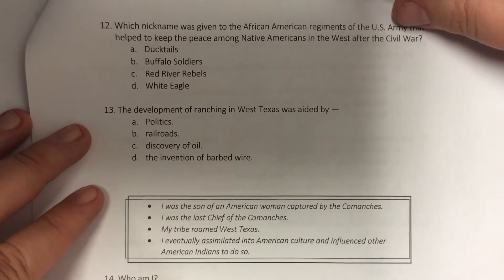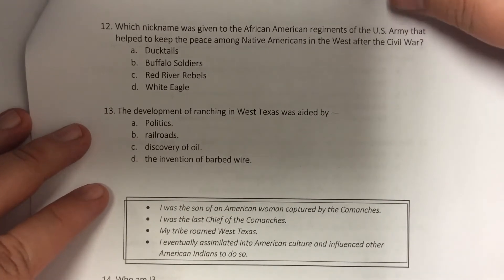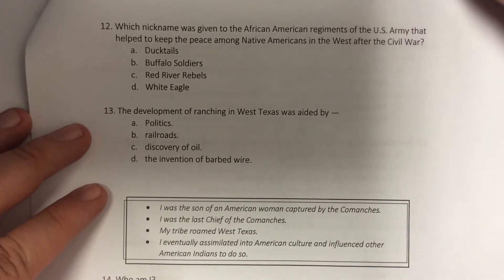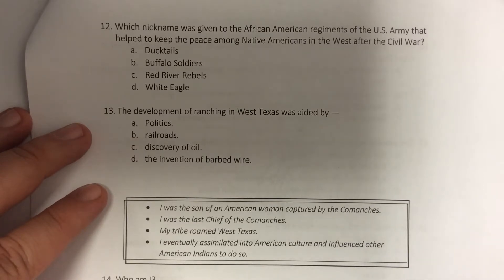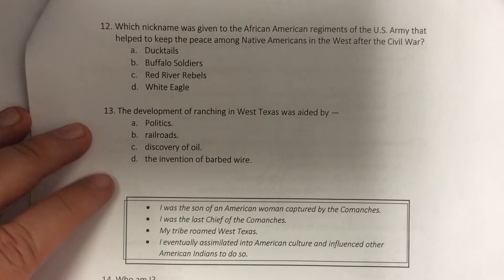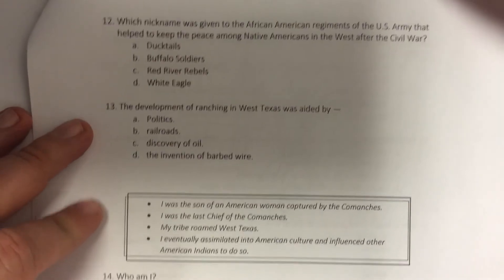Question 13: The development of ranching in West Texas was aided by: politics, railroads, discovery of oil, the invention of barbed wire.